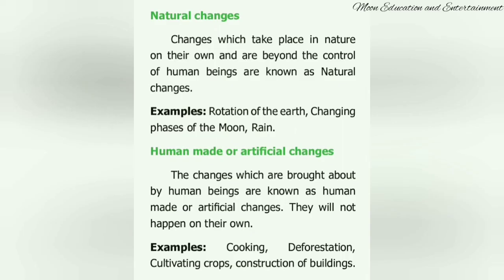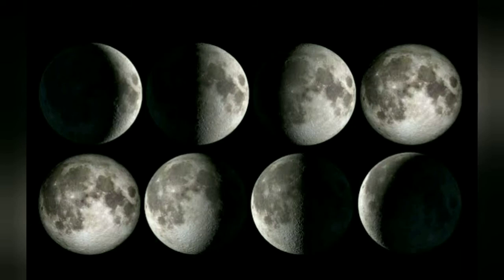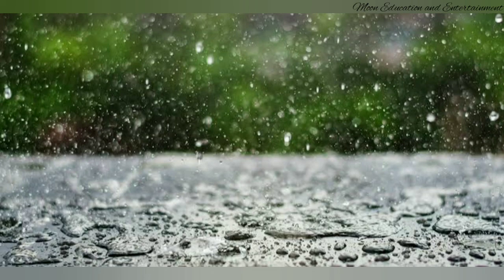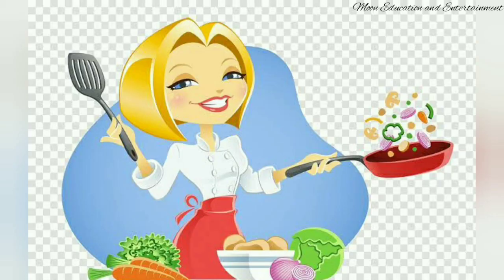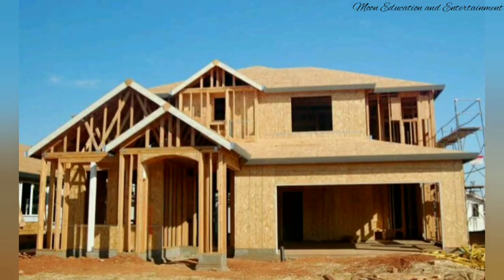Natural changes and man-made changes: natural changes take place on their own without human control — there is no implication of human activities. In man-made changes, all activities are done only by human beings, also called artificial changes. Examples of natural changes include the phases of the moon and rainfall. Man-made changes include cooking — transforming raw food into cooked food — and construction of buildings, turning bricks and mud into a constructed house.